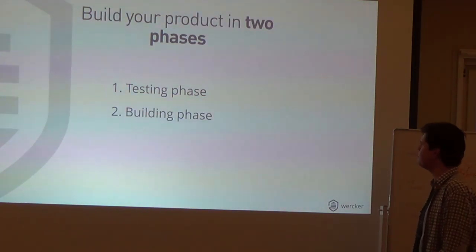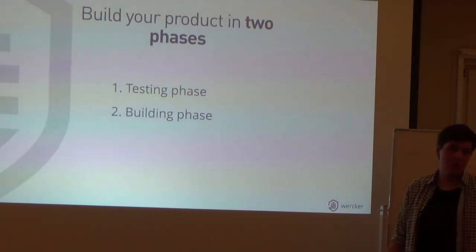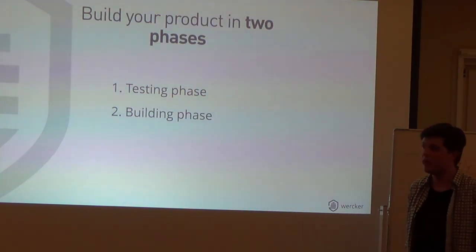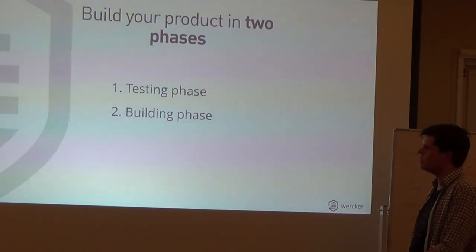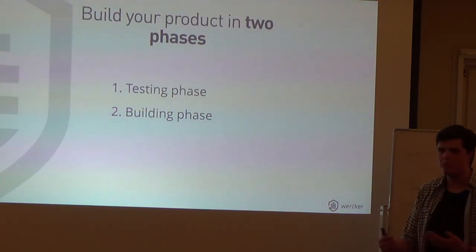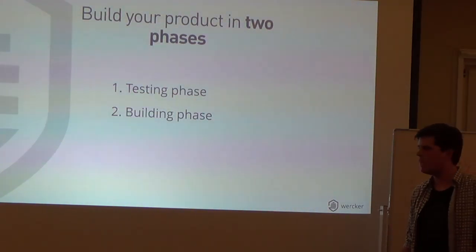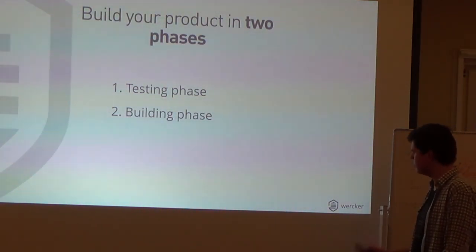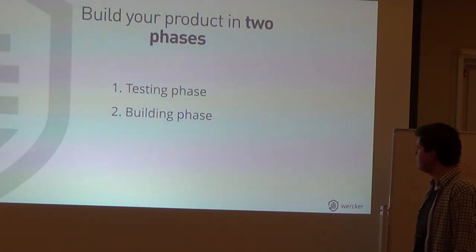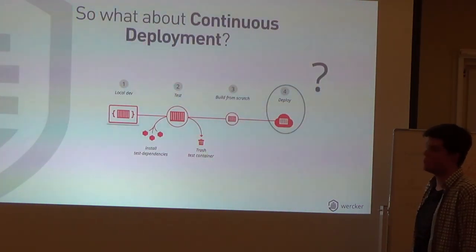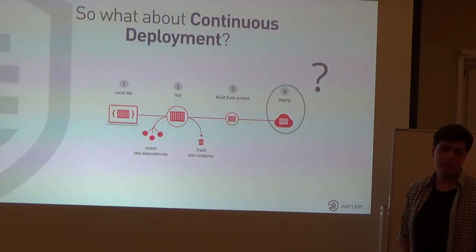This seems quite straightforward, but is also relatively hard to do with Dockerfiles. How do you specify that you want to build two containers from the same Dockerfile? That kind of covers continuous integration.